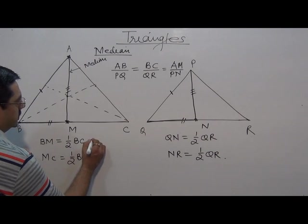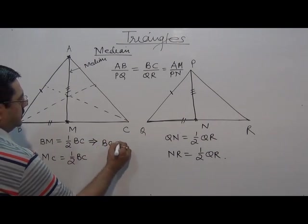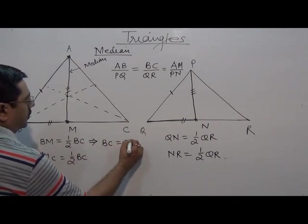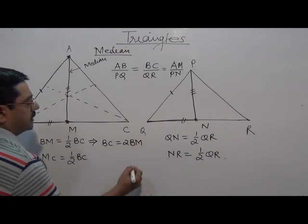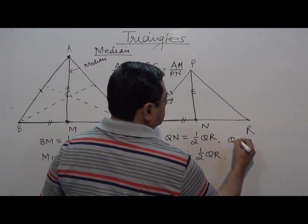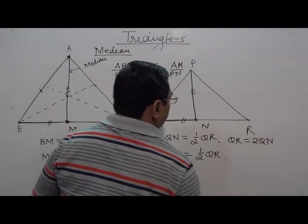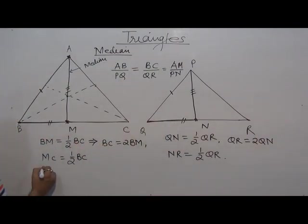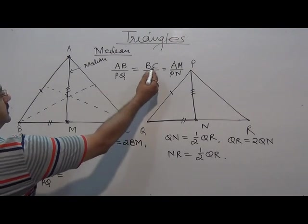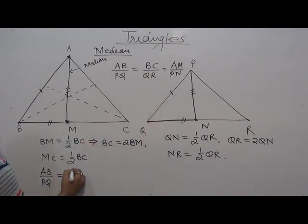So from here I can write BC is equal to 2 times BM. In this criteria, AB upon PQ, it is equal to - now BC, in BC's place you will write it - 2 times BM upon QR.